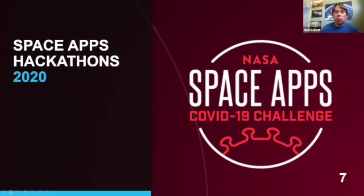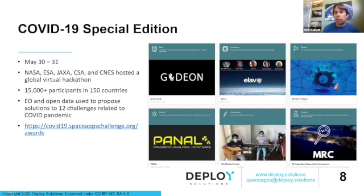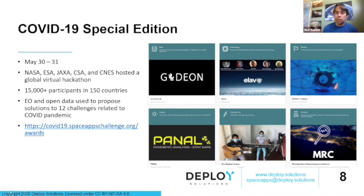I wanted to talk about 2020. This was obviously a weird year because we all started to organize it in January and February, then COVID started to hit. There were actually not one but two hackathons in 2020. The first was a COVID-19 special edition, happening on May 30th to 31st. NASA, ESA, JAXA, CSA, and Kness all joined together to host a virtual hackathon. It was pretty popular — about 15,000 participants in 150 countries. The goal was to solve challenges using space data related to the COVID pandemic.